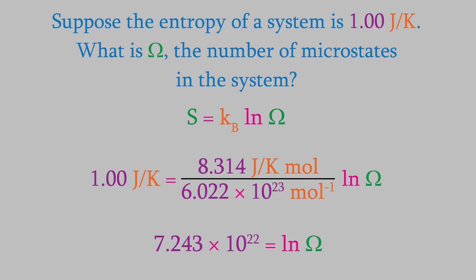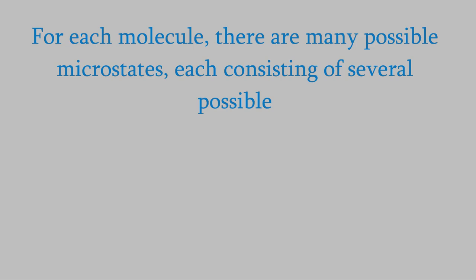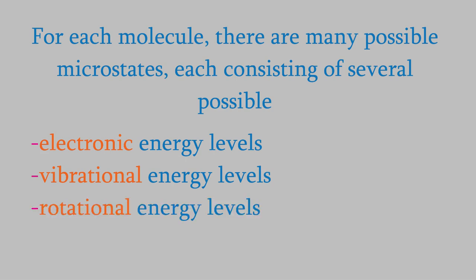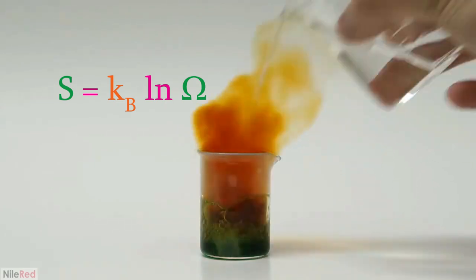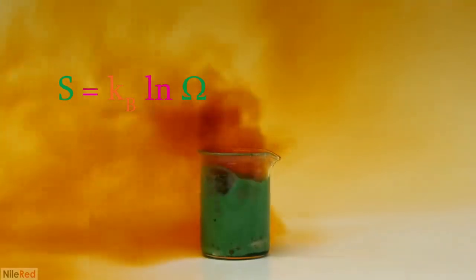This reflects all the possible energy distributions — the energy that each molecule in the system could have. The individual molecules could have a variety of electronic, vibrational, rotational, and especially translational energies, and each of those possible combinations is available to a large number of molecules in the ensemble. That makes it very hard to use this equation to determine the entropy. Omega is difficult to determine, and even if we could calculate it, that number will change if the energies of the molecules change — for example, during a chemical reaction.